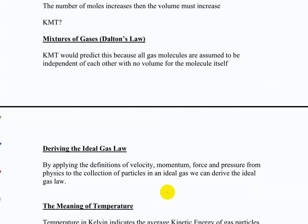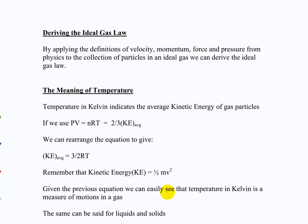Dalton's Law is also predicted by kinetic molecular theory, because we assume gases are independent of each other. The collisions of each gas add up to the total collisions — which is like saying the partial pressure of each gas adds up to the total pressure. We can actually derive this through kinetic energy, using these ideas of physics to derive what's going on in a container of gas.